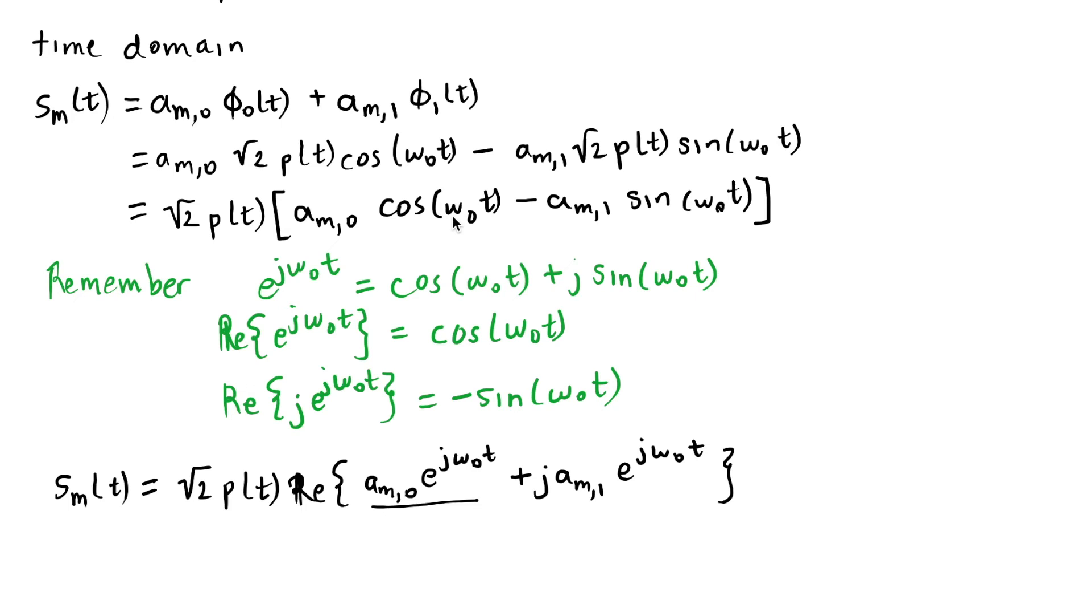And when I take the real part of the j times a_m,1 times e^(j omega_0 t) I'm going to have a minus times the sine part at omega_0 t, so this term up here.